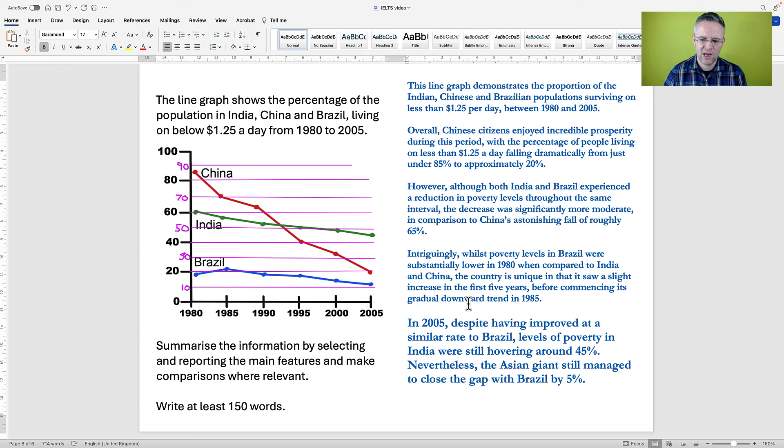In 2005, despite having improved at a similar rate to Brazil, levels of poverty in India were still hovering around 45%. Nevertheless, the Asian giant still managed to close the gap with Brazil by 5%. I hope you enjoyed this video and that you found it useful. If you did, please give it a like, leave me a comment, and why not share this video with somebody you think would find it useful? Thanks for watching and I'll see you next time.